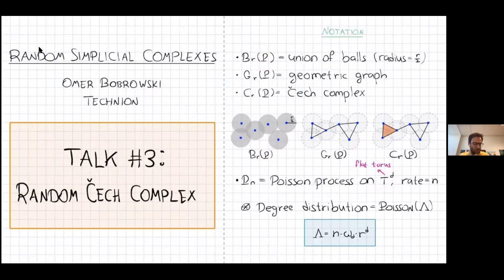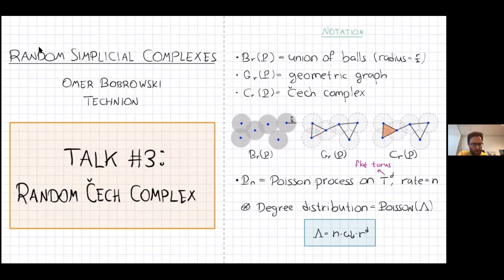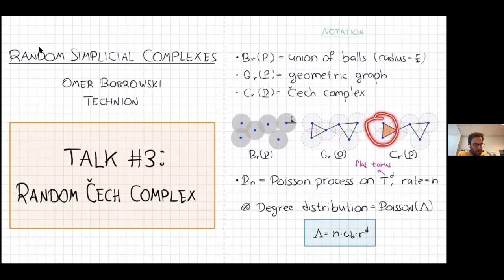I'm looking at the union of balls of radius R over two around the points — that's the object on the left. The geometric graph from this set of points places an edge whenever two balls intersect, or equivalently when the distance between two points is less than R. That's the object in the middle, and the Čech complex is a higher-dimensional generalization, where we also include higher-dimensional simplexes.